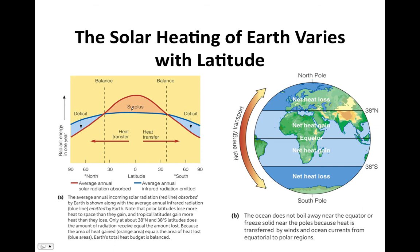If the atmosphere and ocean did not move to recirculate this thermal imbalance, tropical waters would just get hotter and hotter while polar waters would get cooler and cooler. But that excess heat from the net heat surplus at low latitudes is redistributed to high latitudes — from the tropics to the poles. That net energy transport is carried out by circulation in the atmosphere and the ocean. The reason we have circulation in the atmosphere and ocean is because of this thermal imbalance due to unequal heating of Earth's surface by the sun with latitude.